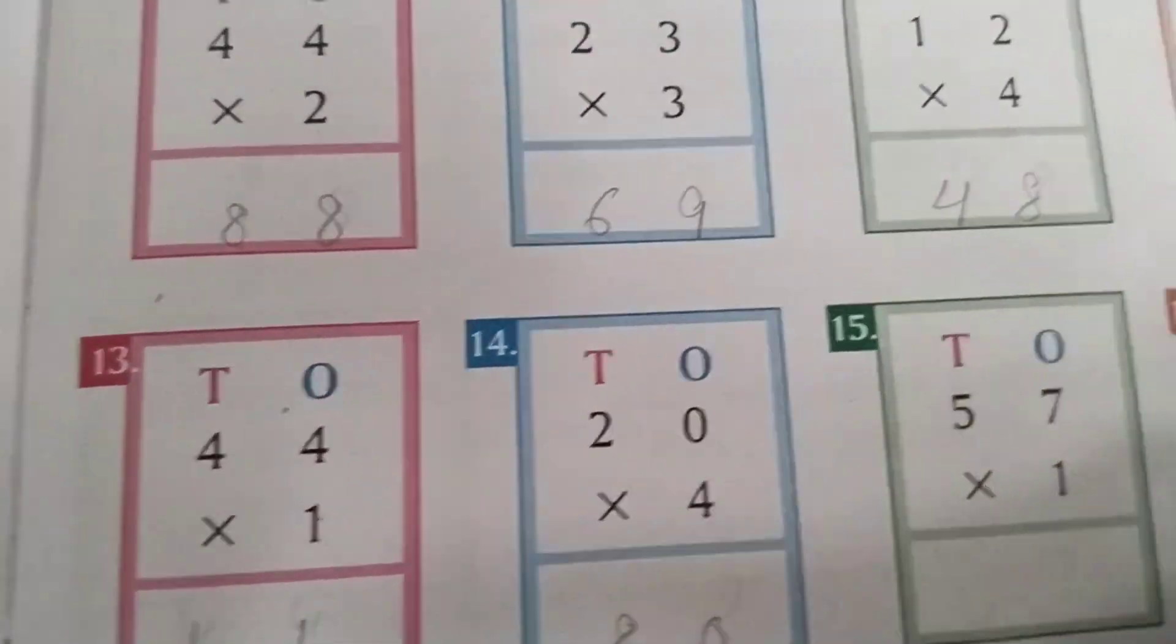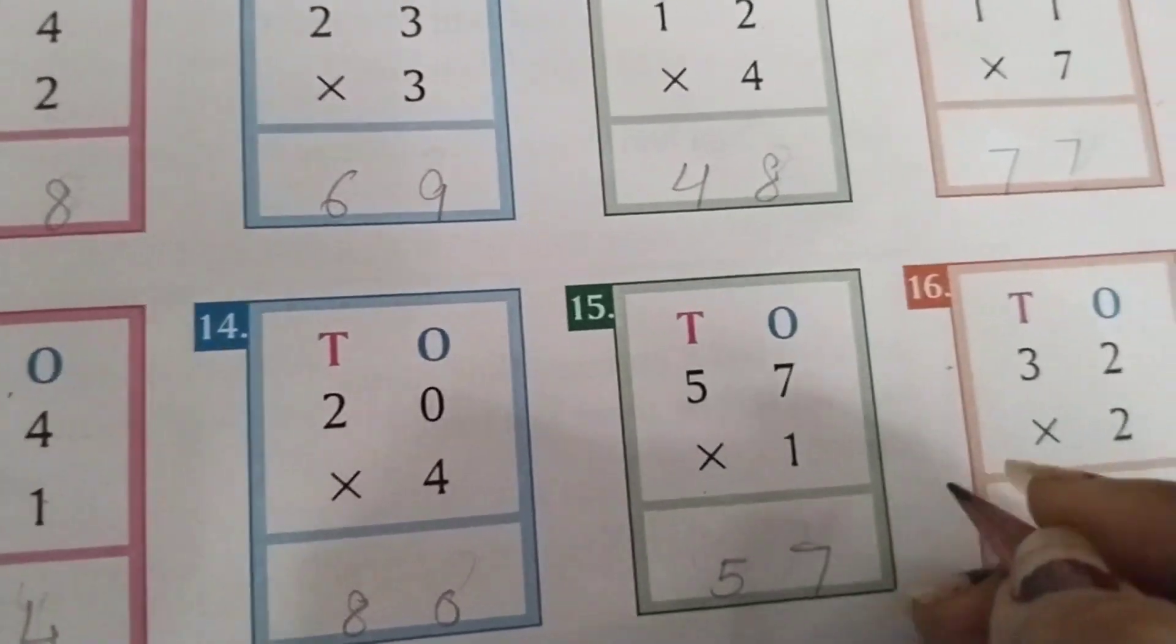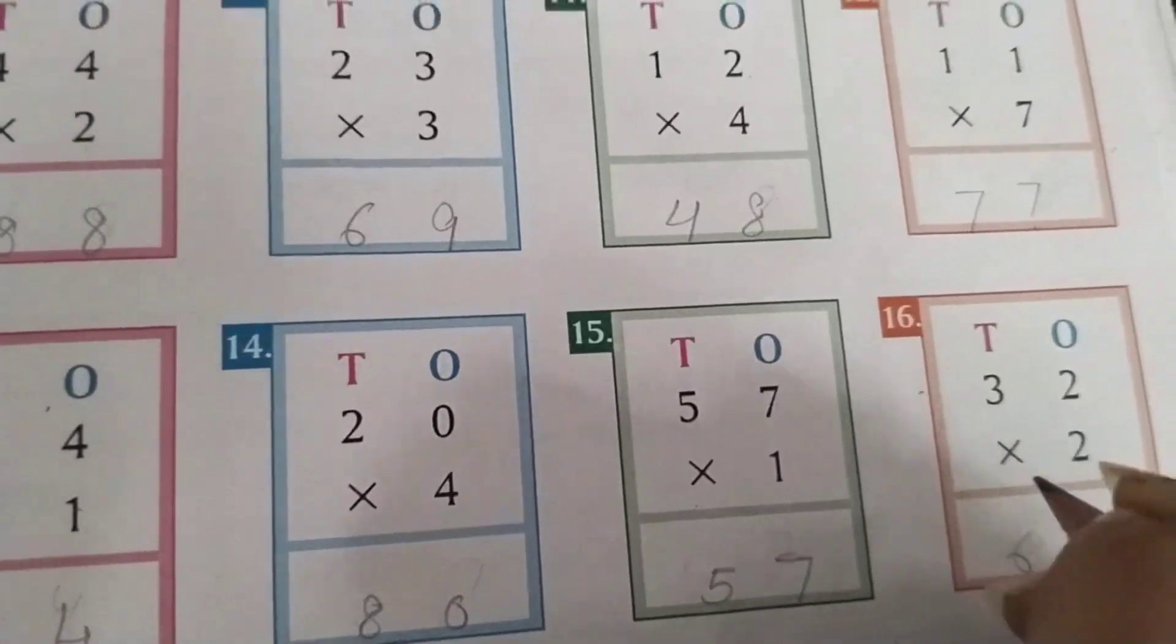4 2s are 8. 1 7s are 7. 1 5s are 5. 2 2s are 4. 2 3s are 6. 64 is the answer.